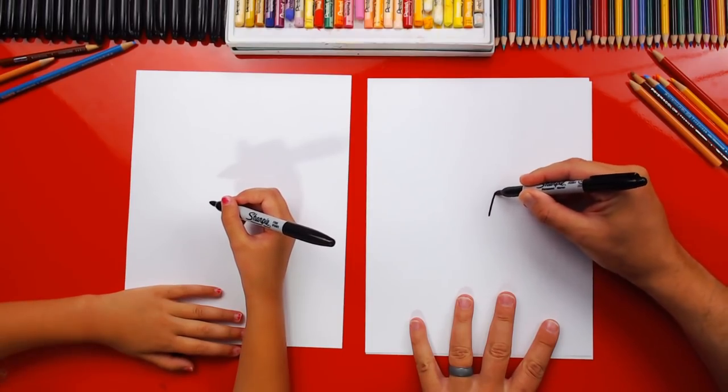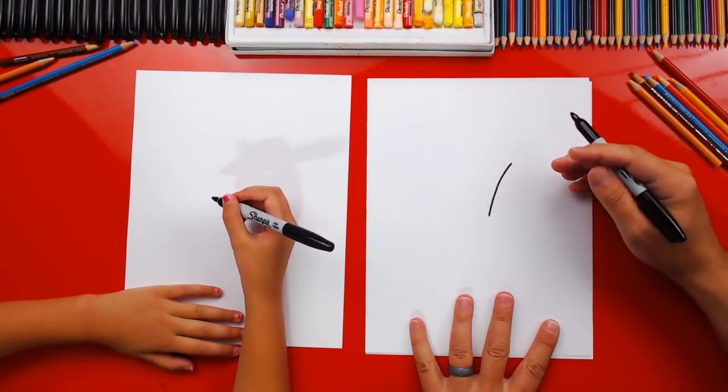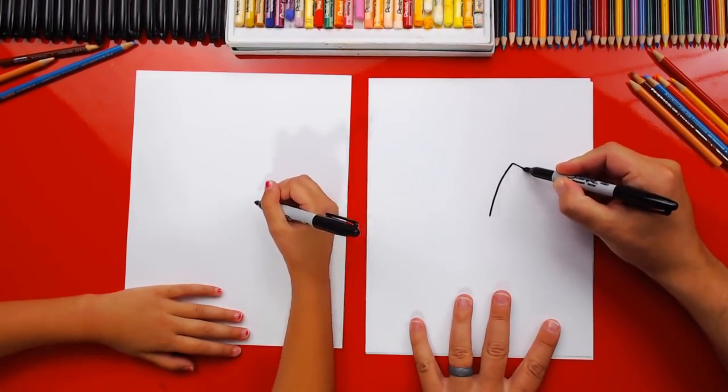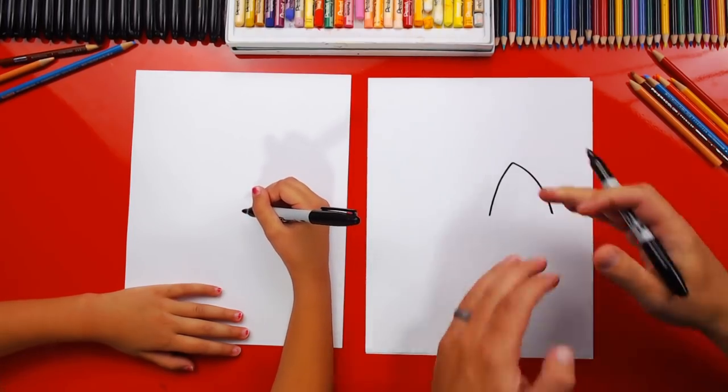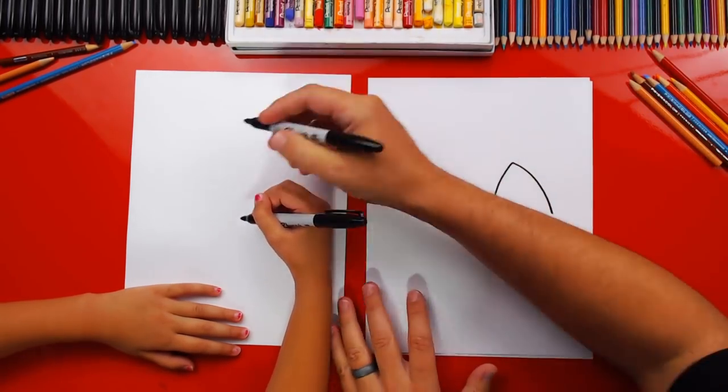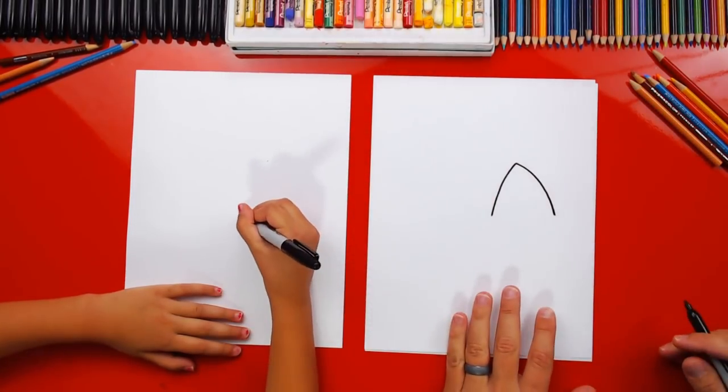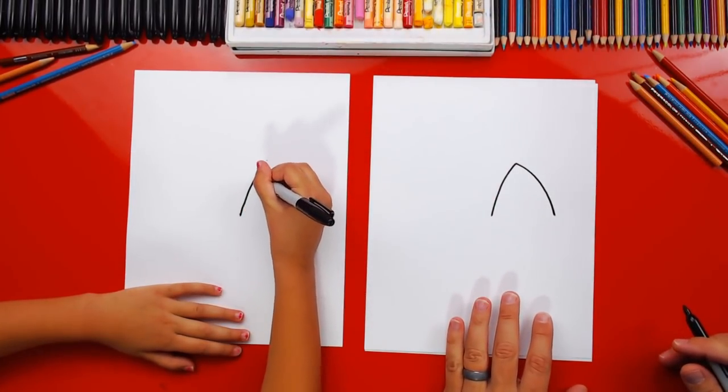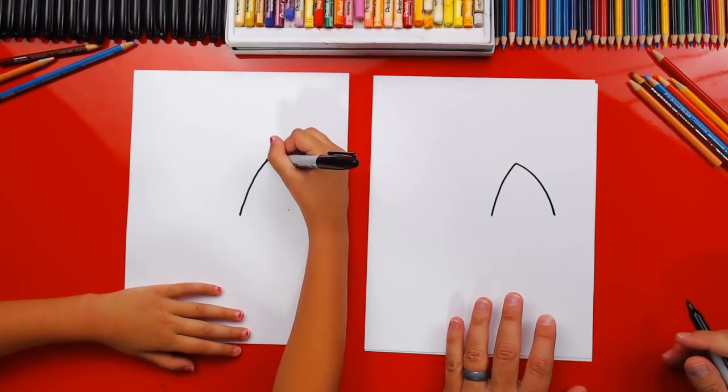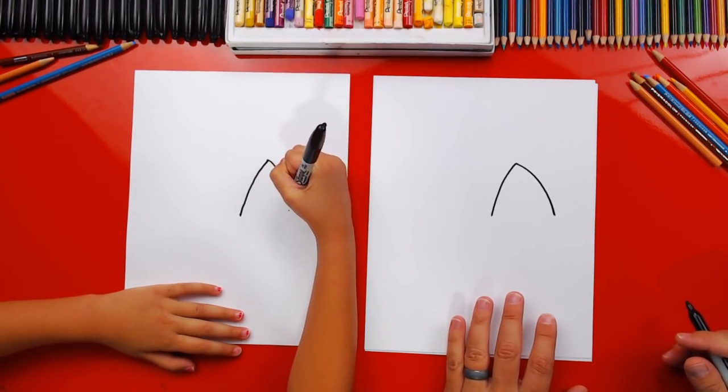We're gonna draw an upside down V but it's curved. Watch this. It's curved. See how it's curved. So we'll start there. Go up, back down. There you go. Good job.